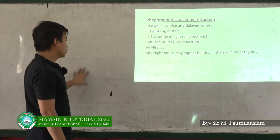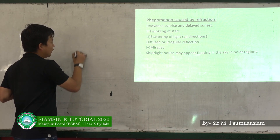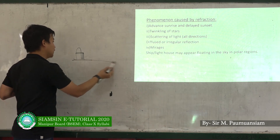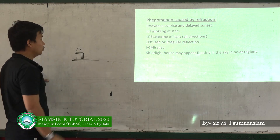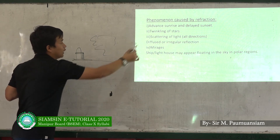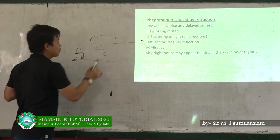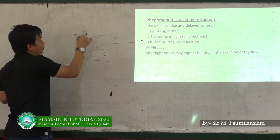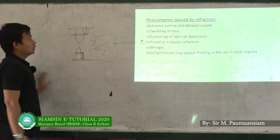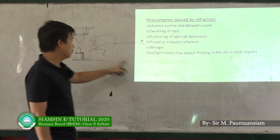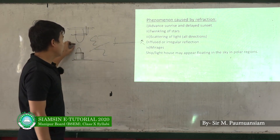When we observe a mirage, the image appears to float slightly above the ground. Lighthouses may also appear to float in the sky in polar regions — this is due to refraction of light bending through atmospheric layers.